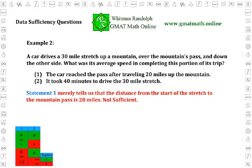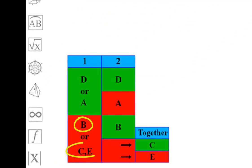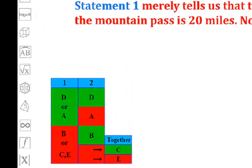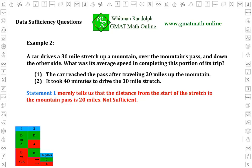Remember, we're not through until we examine statement two. At this point, there are three possible answers to the data sufficiency question: B, C, or E — these are the possible answers if statement one is not sufficient. Statement two: it took 40 minutes to drive the 30-mile stretch. As you can see, this is identical to statement one from example one. Statement two gives the time traveled in the 30-mile stretch, and so it is sufficient to solve the problem. Statement one is not sufficient, and statement two is, so the answer is B.